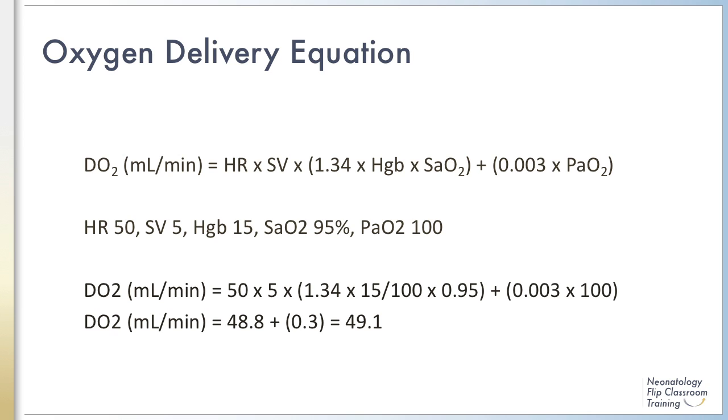So in this equation, we take heart rate, which is 50, times the normal stroke volume for a term neonate, which is 5 milliliters, times the amount of oxygen bound to hemoglobin in the blood. That part of the equation is 1.34 times 15, and here I have divided the hemoglobin by 100 to convert deciliters to milliliters, times 0.95, which is the oxygen saturation, plus the amount of oxygen dissolved in the blood, which is 0.003 times 100. This makes 48.8 plus 0.3, or 49.1 milliliters per minute.